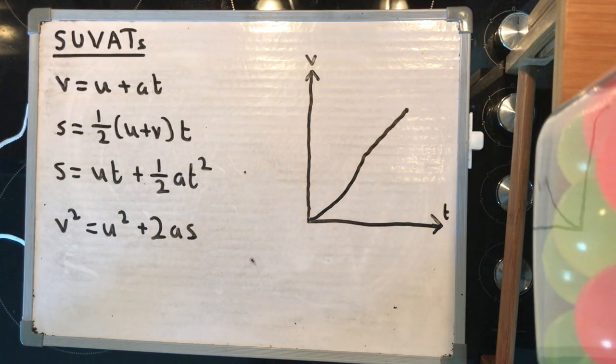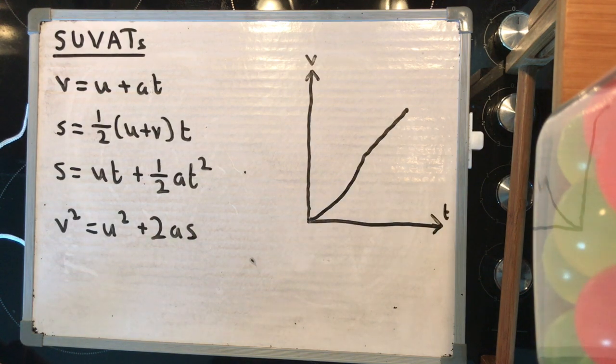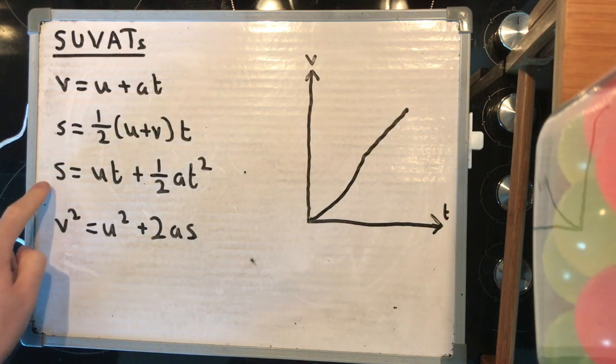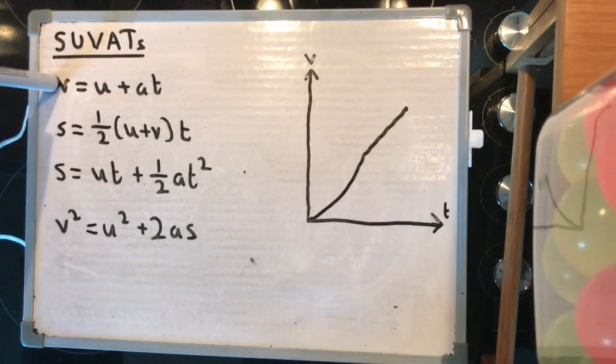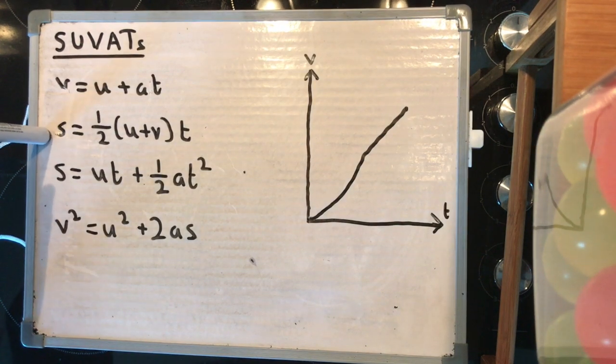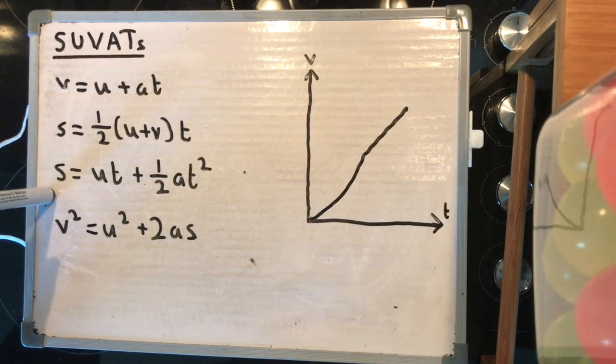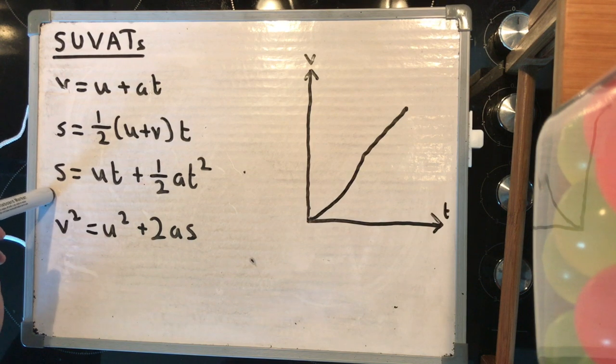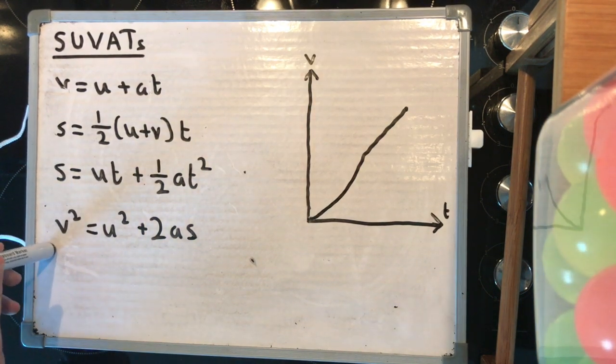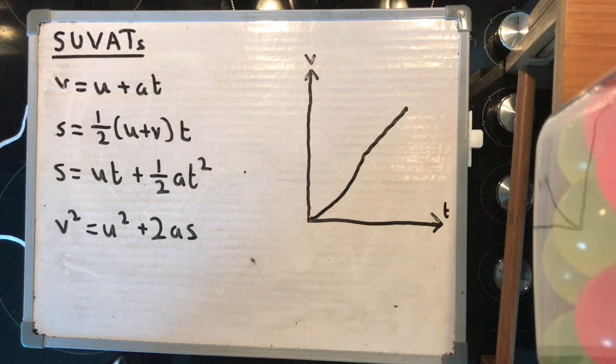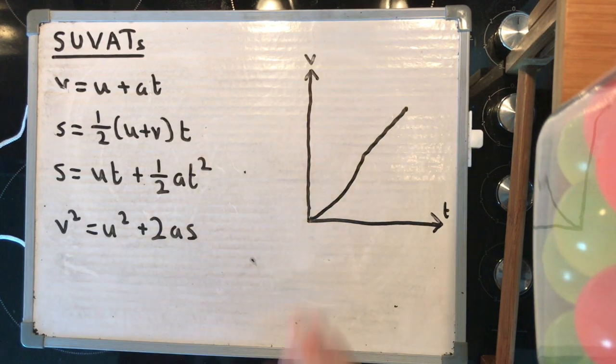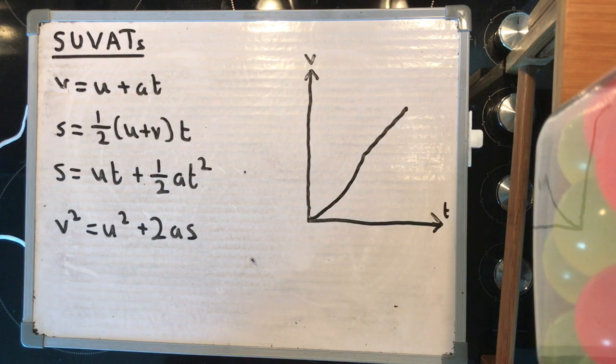So, these are the four equations that, according to the A-level specification for physics, you need to know. There is a fifth, which is a variance on this third one, but we'll talk about that one later. They are V equals U plus AT, S equals a half U plus V T, S equals UT plus a half AT squared, and V squared equals U squared plus 2AS. And we're going to derive them starting from nothing, but first principles and a velocity time graph.